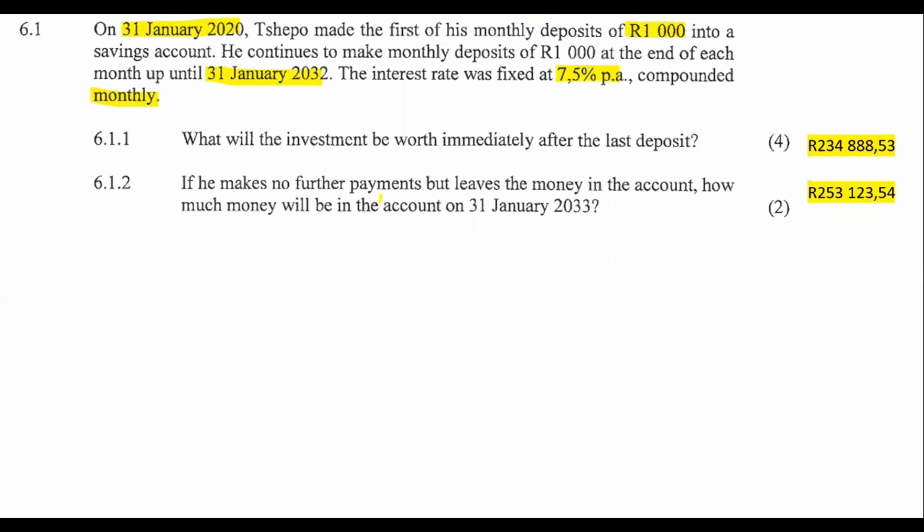Okay, so that's all pretty basic, pretty easy. And then it says, what will the investment be worth immediately after the last deposit? So I'm guessing that 95% of you would be okay with the idea that Shepo is trying to save up money. That's definitely going to be a future value type of scenario because he wants the money in the future. So we can use the future value formula.